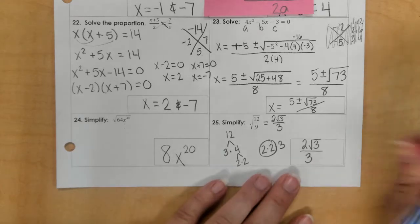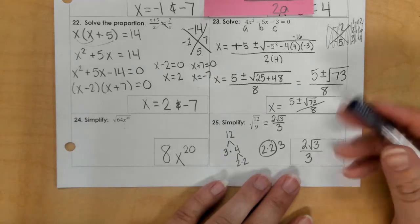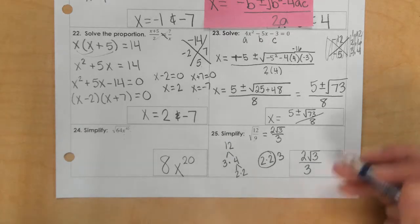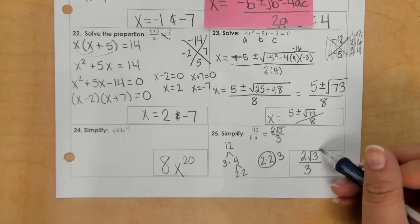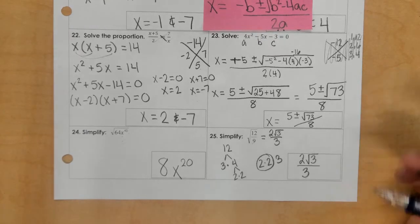Now, we cannot reduce because 2 and 3 can't reduce. They're not in a radical, even though they're like terms, because they're not in a radical we can't reduce them. And then this 3, we can't cross these out because this is in a radical and this is not. So those are definitely not alike.